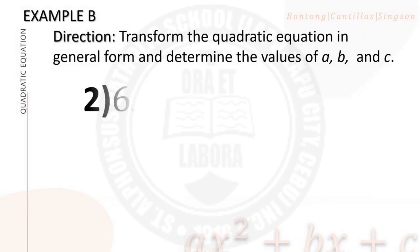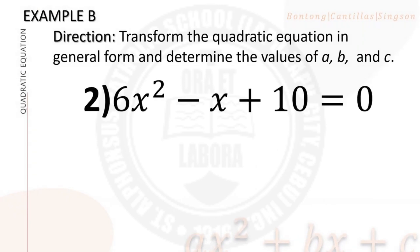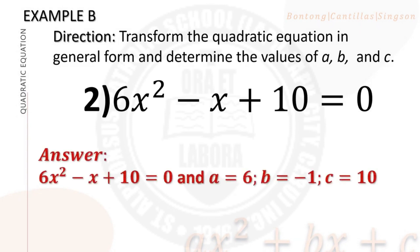Number 2: 6x squared minus x plus 10 equals 0. The general form is 6x squared minus x plus 10 equals 0 — it is already in general form — and the values are a equals 6, b equals negative 1, c equals 10.